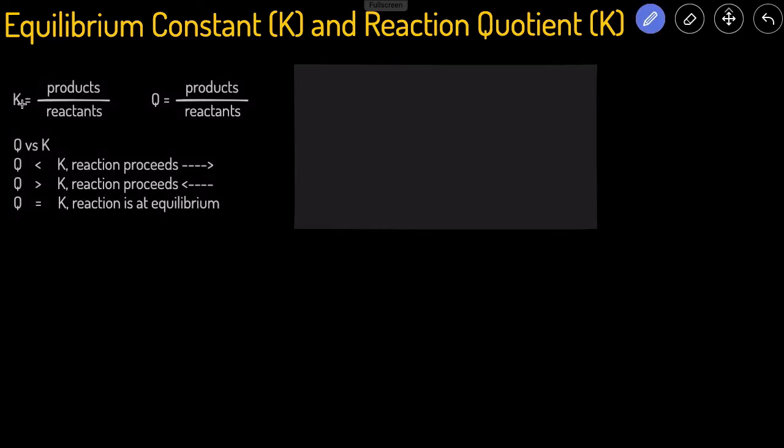To start, K is equal to the products over the reactants. Q also happens to be equal to the products over the reactants. But the main difference is that K is referring to the equilibrium constant. So you can only plug in equilibrium values into the K expression to get the value of K. And in Q, you can plug in the values at any point during the reaction.